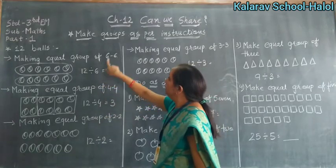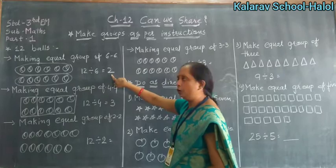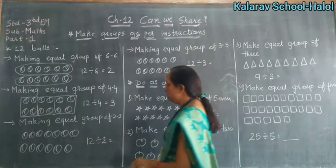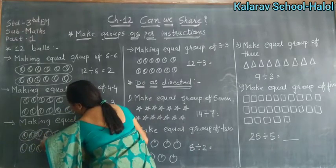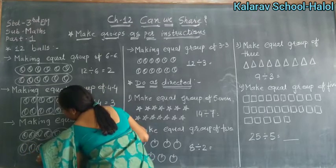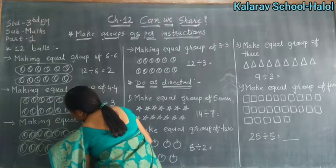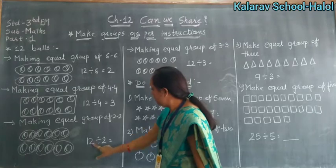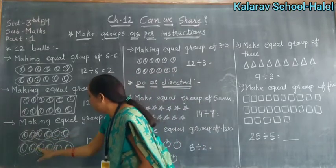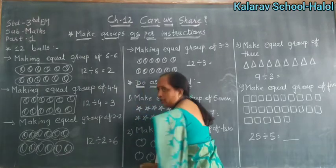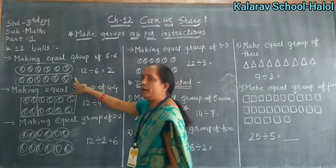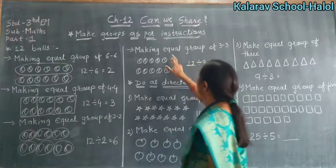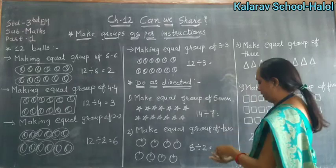So in general: agar 6 ka group banayenge, to 2 group banayenge. Agar 4 ka group banayenge, to 3 group banayenge. So 1, 2, 3, 4, 5, 6 — and again 1, 2, 3, 4, 5, 6. Answer: how many groups? Here 6 ka group banayenge to 2 group banayenge. Or here 2 ka group banayenge — 3 ka group banayenge.